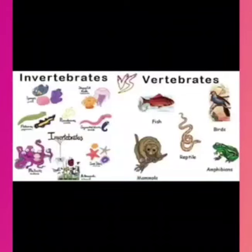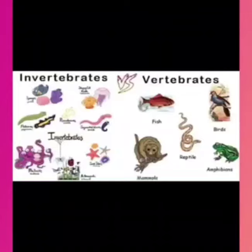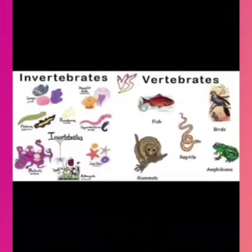Now we talk about amphibians. These animals live on land or near water. They have thin and moist skin that helps them to respire. They also use their lungs for respiration when they are on land. Common amphibians are frog, toad, etc.